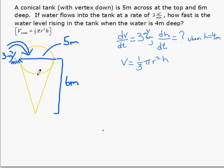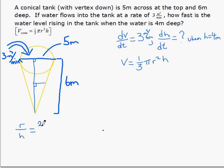In order to remove r, because it is going to change, we need to use the property of similar triangles. If we look at our cone and draw a line up the middle, we can see that a cone gives us two similar triangles. The corresponding parts have constant ratios, so at any point on the cone, radius over height is constant. We know the radius at the top is 2.5 and the height is 6, which gives us r equals 2.5h over 6.